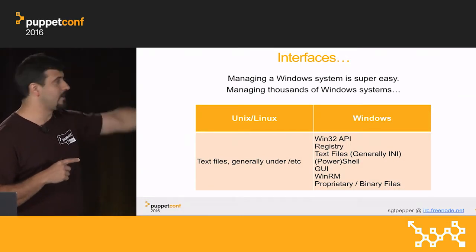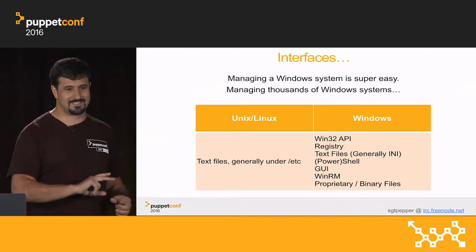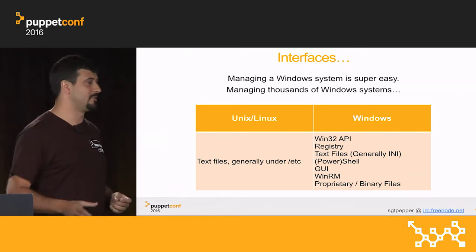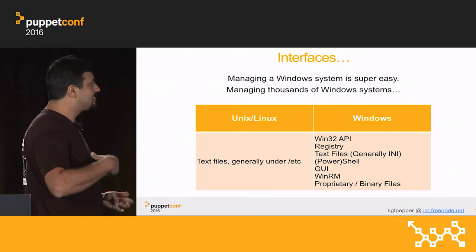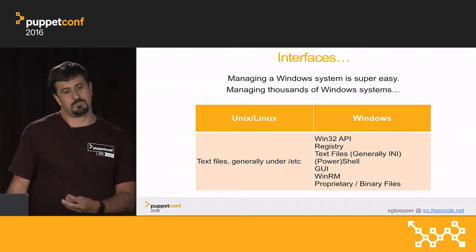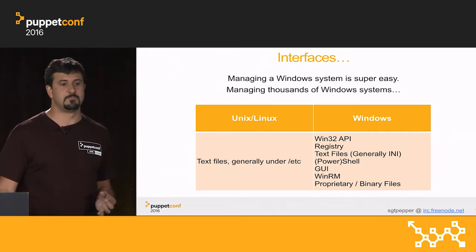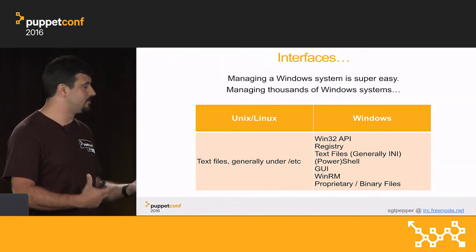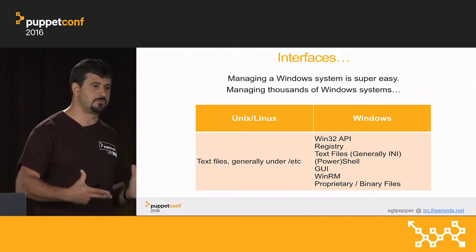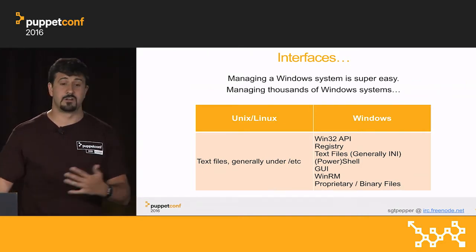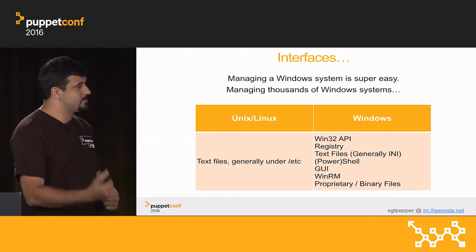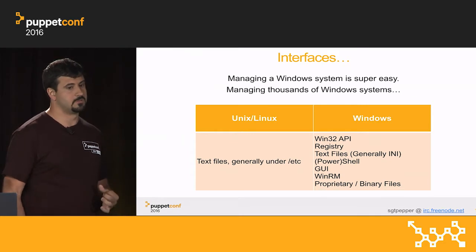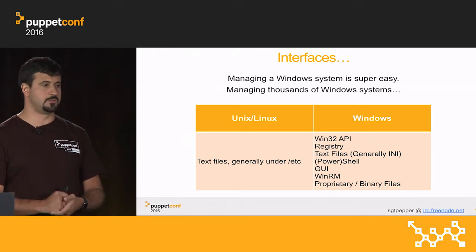Managing a single Windows system is really easy, but when you scale to 100 or 200 and you're pointing and clicking, things get more complicated. In Unix, the model is pretty simple — it's generally just a text file, maybe an INI format, and configuration is driven by a file. It's a package and a service, and that's it. In Windows, it's less restrictive on how you model configuration. Things are configured through the Win32 API, the registry, certain software uses text files, PowerShell, the GUI, WMI, and proprietary binary files — which pose a challenge because they're slightly harder to model.